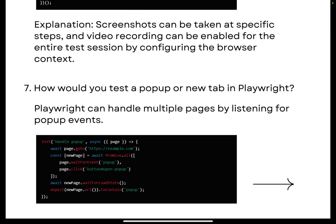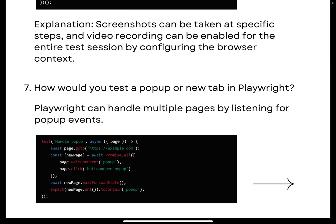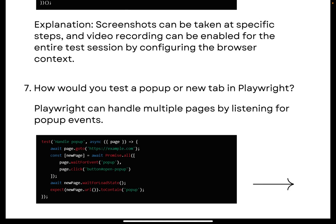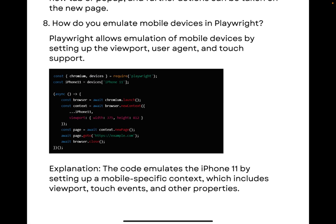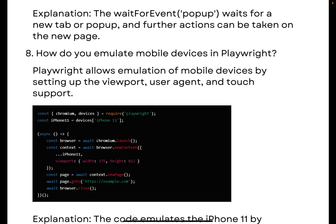The next question is: how would you test a pop-up or new tab in Playwright? Playwright can handle multiple pages by listening for pop-up events. You use the `waitForEvent()` method and pass `'popup'` inside it. The key thing to remember for this question is the `waitForEvent()` function — that's the main method to recall.